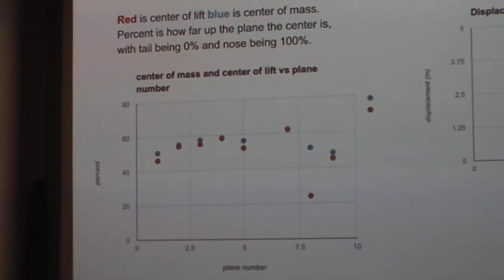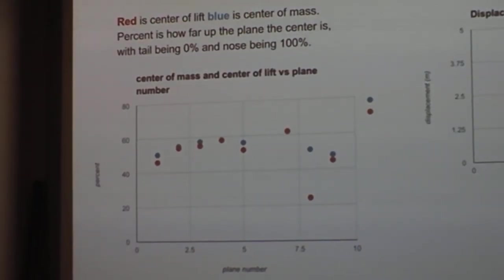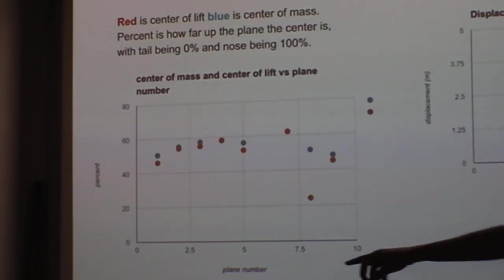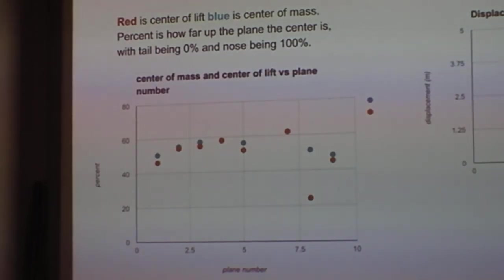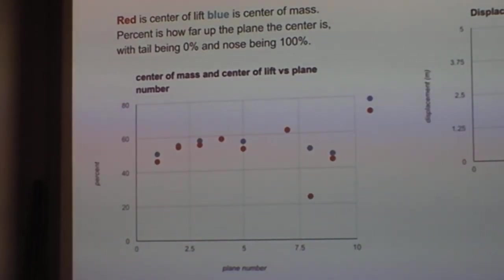But this graph is kind of interesting. Because we do know that planes four and seven worked the best. So this is plane seven, and this is plane four. The red is the center of lift, and the blue is the center of mass. And on both of them, they're right on top of each other. So that led us to believe that the closer that those two were together, the further planes go. Or the better the plane will be. It's a more balanced paper airplane.